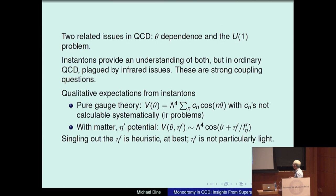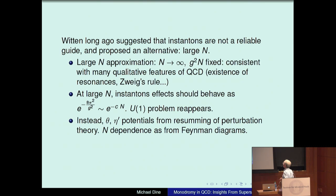This was also rather heuristic, since the eta prime is not particularly light, and so it's not clear why one should focus on it. Witten long ago suggested an alternative — that instantons might not provide a reliable guide, and suggested instead one should think about this from the point of view of the large N approximation.